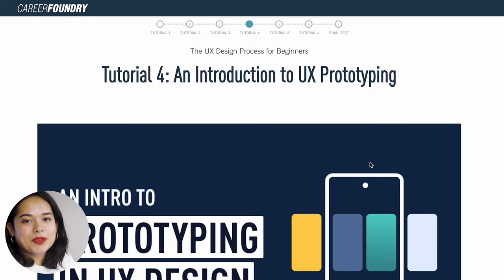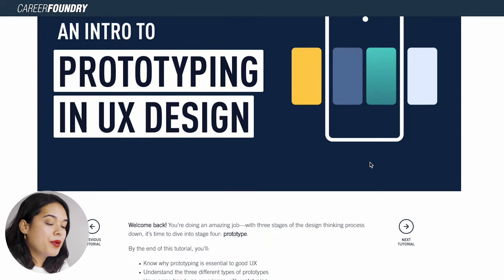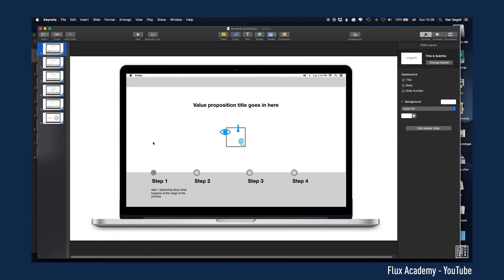After you've defined the problem and experimented with different solution ideas, it's time to actually test some of them. UX designers do this by building a prototype and testing it with users. A prototype is a more built-out, interactive version of a rough solution idea. The fourth tutorial teaches you more about this prototyping phase — there are many ways to prototype. You can build a prototype out of paper, or use many different digital tools. If you don't have access to those tools, you can even use Keynote to create a prototype.